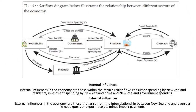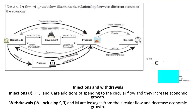The internal influences are everything within the main circular flow — consumer spending in New Zealand — so those are the four sectors on the left. The external influences are the overseas sector on the right. This whole diagram represents our New Zealand economy: how it's structured, where all the goods and services are bought or consumed, where investment goes, and where all the money flows within the different sectors.